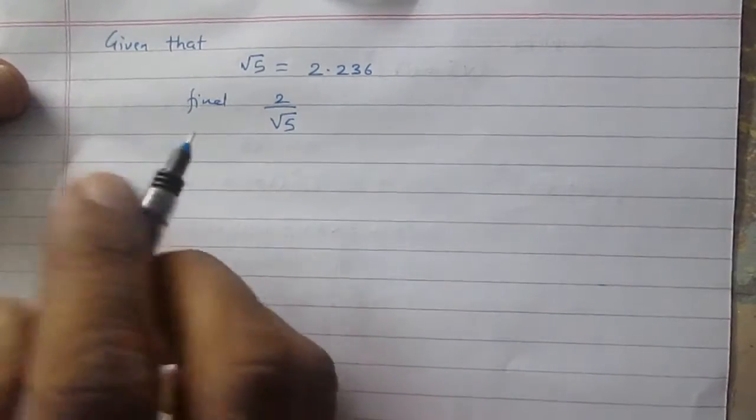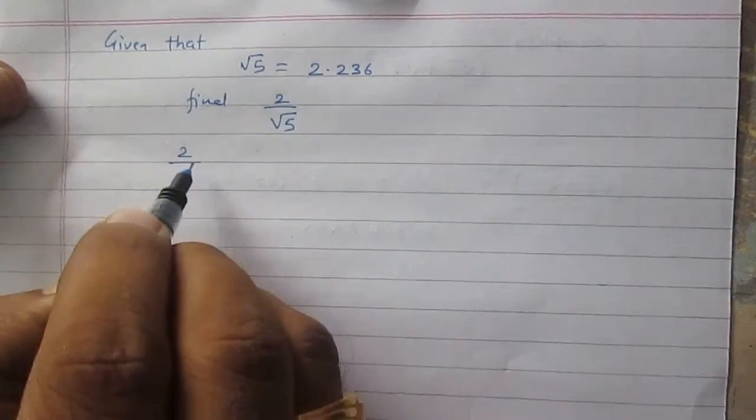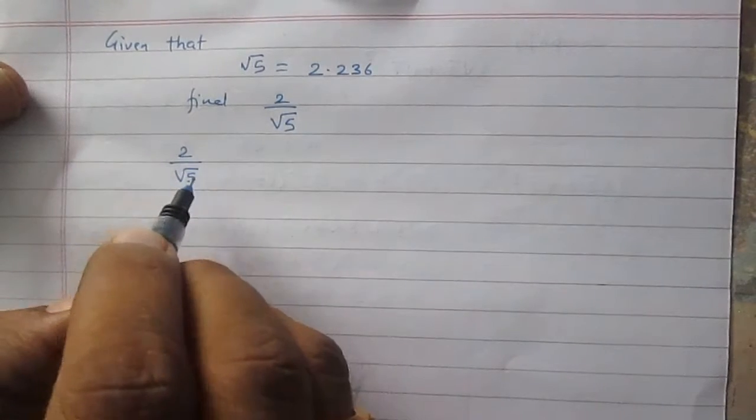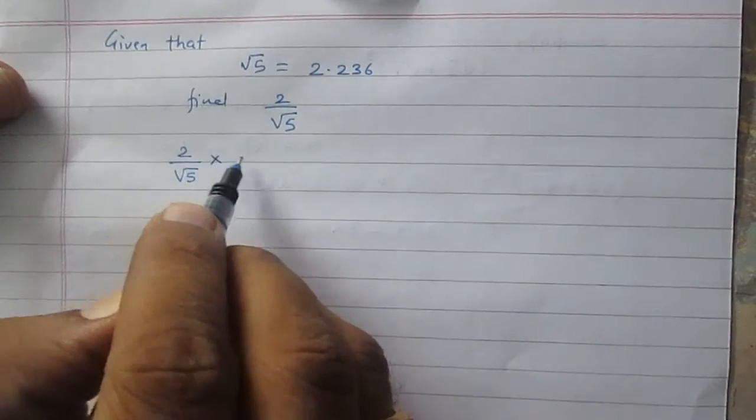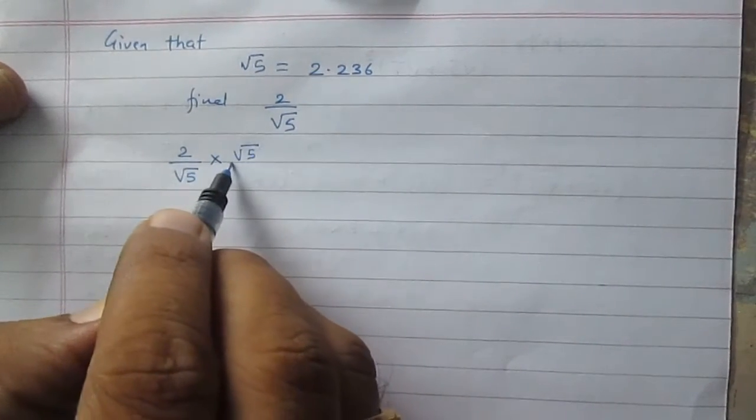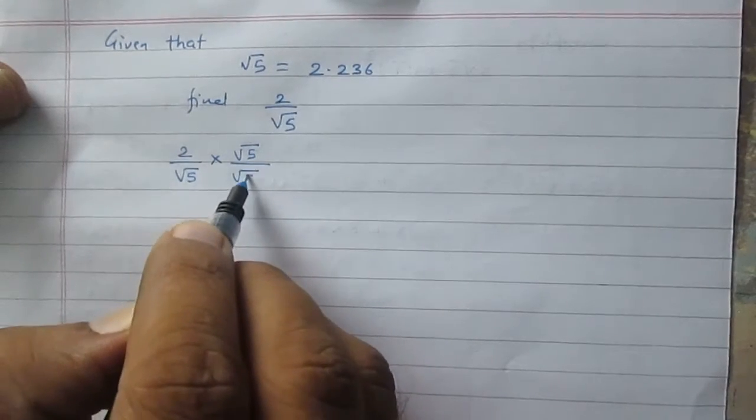So let us first rationalize it. We can rationalize 2 divided by square root of 5 by multiplying square root of 5 in the numerator and denominator both.